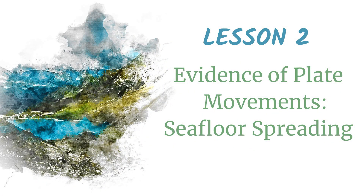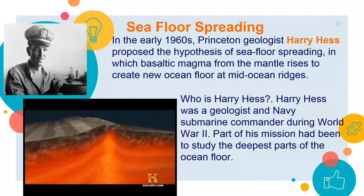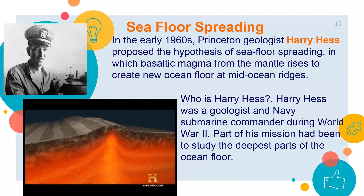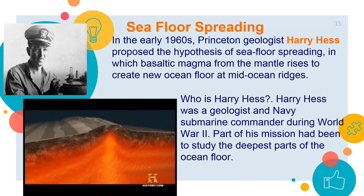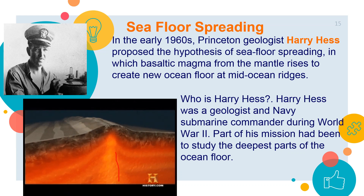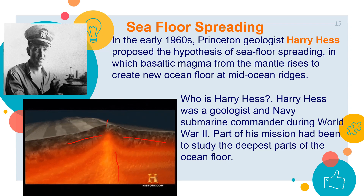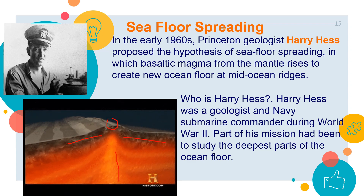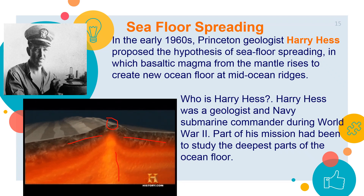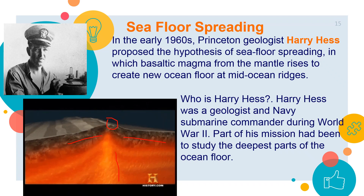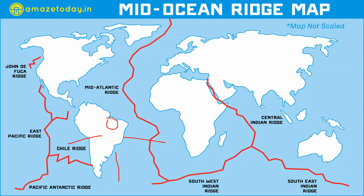Lesson 2 covers the second evidence for plate movements: seafloor spreading. When seafloor spreading was put forward, it paved the way for the acceptance of continental drift theory. In the early 1960s, Princeton geologist Harry Hess proposed the hypothesis of seafloor spreading, in which basaltic magma from the mantle rises to create new ocean floor at mid-ocean ridges. Harry Hess was both a geologist and a Navy submarine commander during World War II, studying the deepest parts of the ocean floor. Instead of finding submarines, he discovered the Mid-Atlantic Ridge.